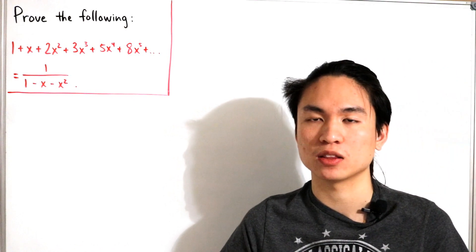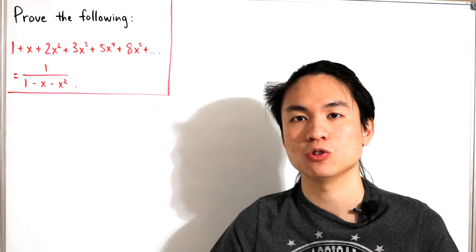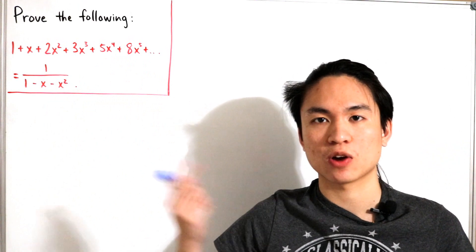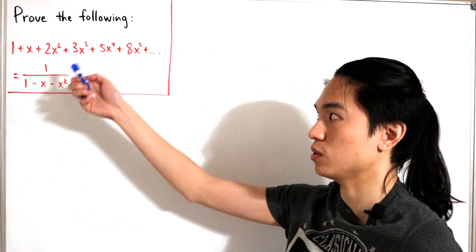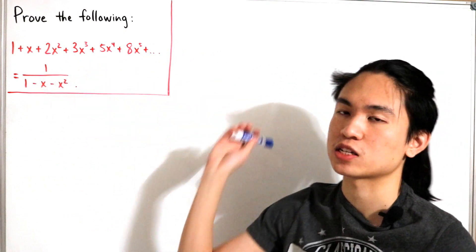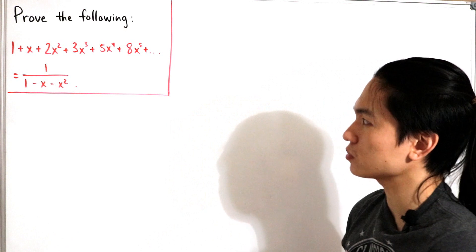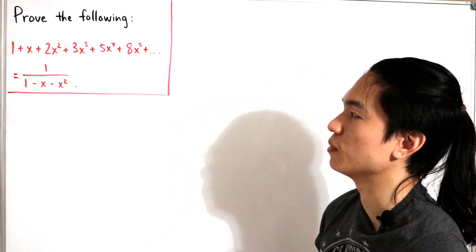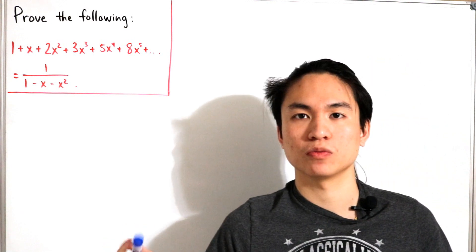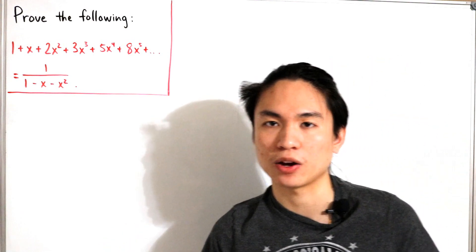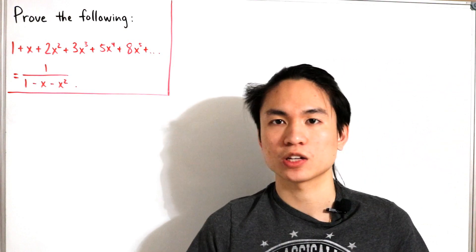Taking those sums gives the next term: F(2) = 2, then F(1) + F(2) = 1 + 2 = 3, so F(3) = 3, and so on. That's how these numbers are constructed — they have some really nice properties, though we won't go into much detail about that.